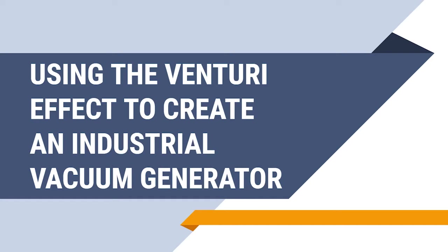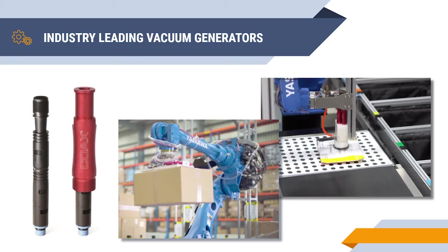Today we will be discussing harnessing the Venturi effect to create our own industrial vacuum generator. In recent years, companies have started using these vacuum generators instead of traditional vacuum pumps because it is more convenient to route compressed air to the end effector, and generating the vacuum closer to the workpiece minimizes losses, allowing heavier objects to be lifted.